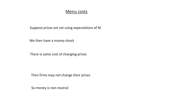In the previous video we looked at starting to derive the New Keynesian model and looked at the implications that imperfect competition in this model had on the economy, and more specifically the output that was below the social optimum.